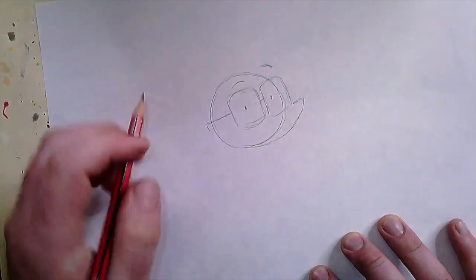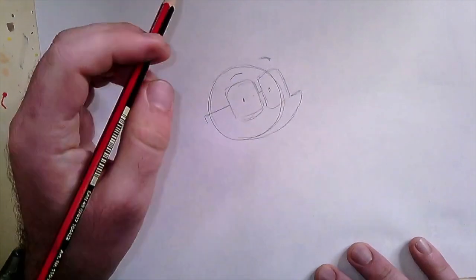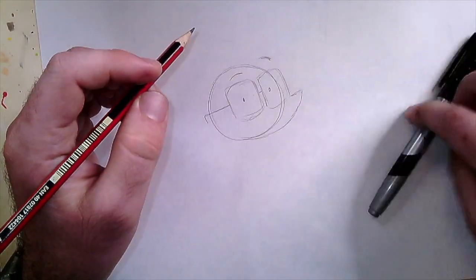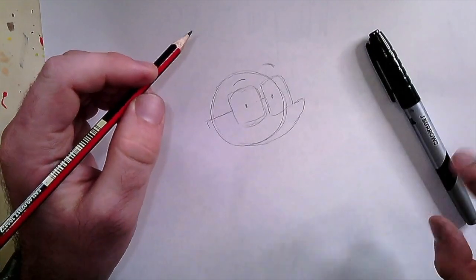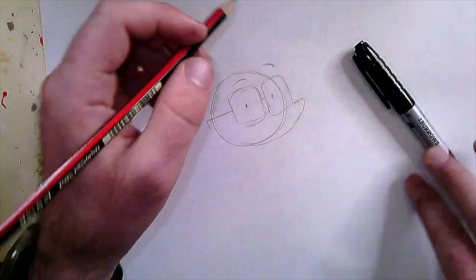We're going to put his body on next. We're not going to put every single detail in with the pencil, just the guidelines. Then we're going to go over the top with a felt tip pen or a texter or a black colored pencil if you've got one.